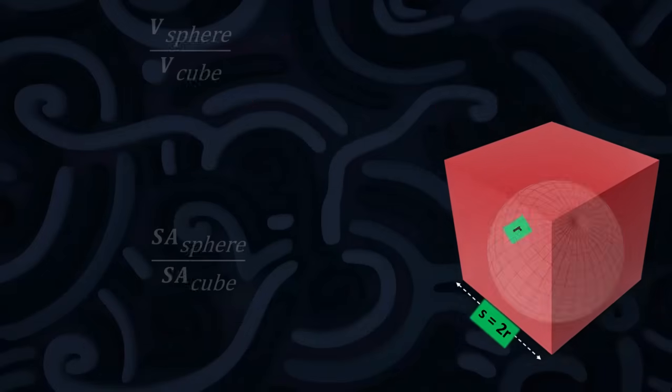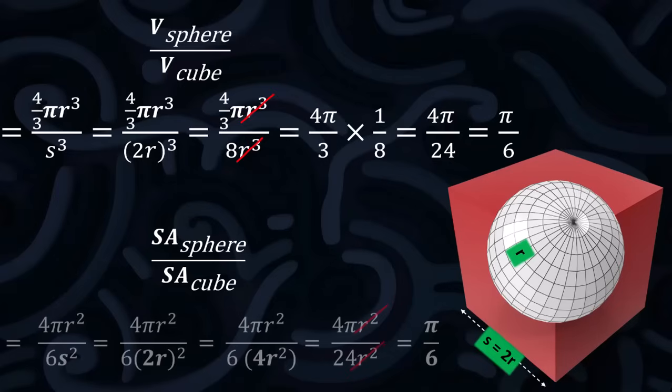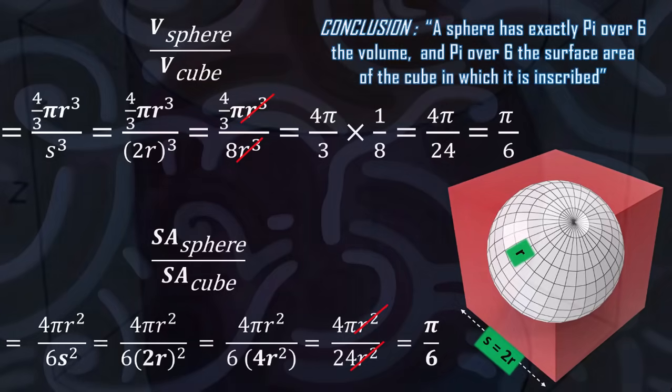Now the sphere and the cube? It's pi over 6. And the surface area? Pi over 6. The sphere has exactly pi over 6 the volume, and pi over 6 the surface area of the cube in which it is inscribed.